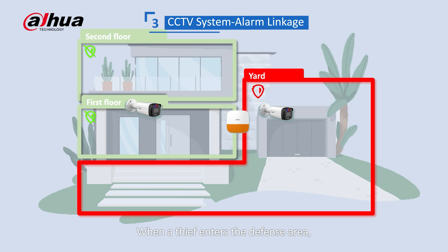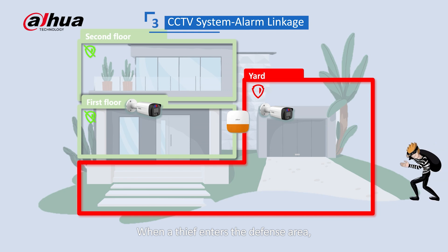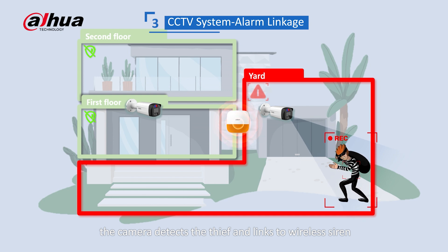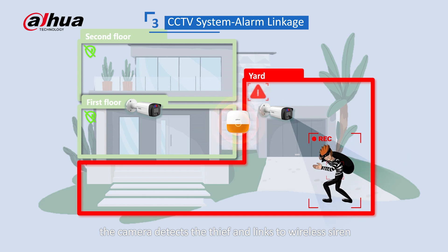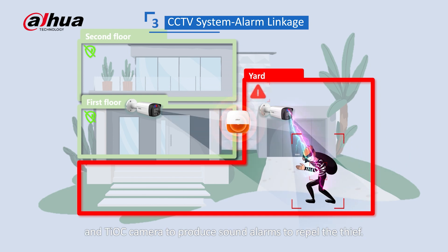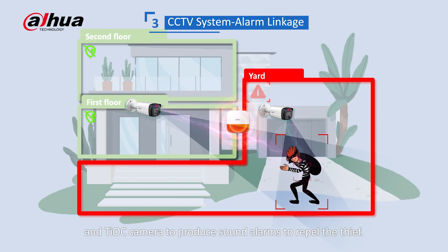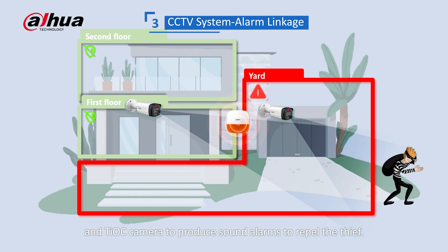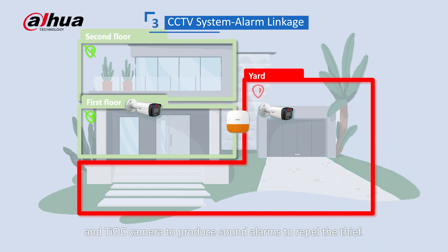When a thief enters the defense area, the camera detects the thief and links to the wireless siren and the chalk camera to produce sound alarms to repel the thief.